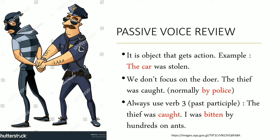We don't focus on the doer. The thief was cuffed — because you did call the police, so now the thief was cuffed, normally cuffed by the police. Because it is passive, we use verb three, or past participle. The thief was cuffed. I was bitten by hundreds of ants — bad news. Cuffed, beaten, stolen are verb three. Don't forget, every passive voice uses verb three.